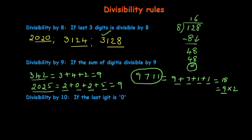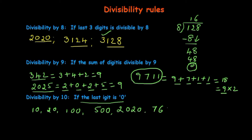The next rule is divisibility by 10: this is very simple — if the last digit of the number is 0, then the number is divisible by 10. Examples include 10, 20, 100, 500, 760, and so on, because every such number ends with the digit 0.